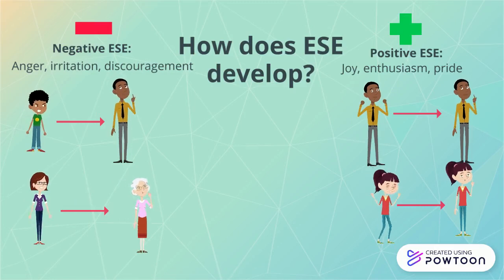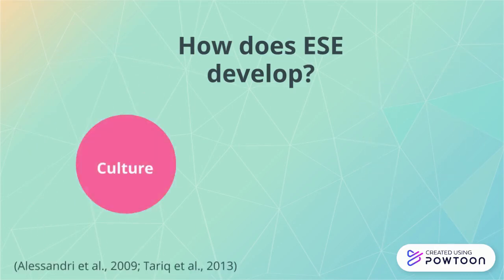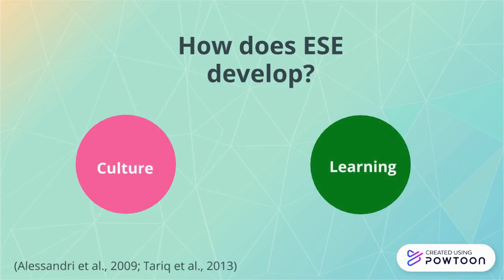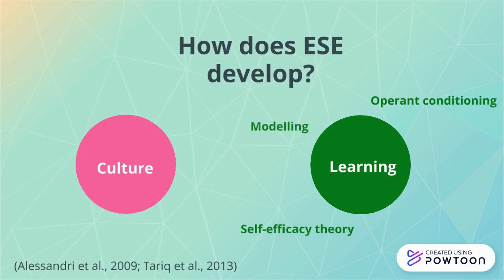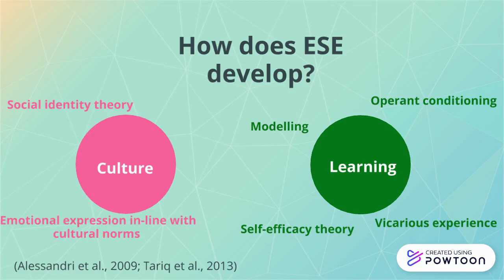Additionally, social theories would highlight culture and learning as imperative to ESE development. Social learning theories such as operant conditioning and self-efficacy theory would state that individuals are shown to model the emotions they see and vicariously experience. This is further emphasised within social identity theory, whereby individuals would steer towards emotional expression that is aligned with in-group behaviours. This may explain why John has high ESE in his ability to manage his emotions, as this is what his culture would have modelled and taught him.